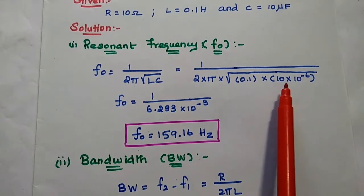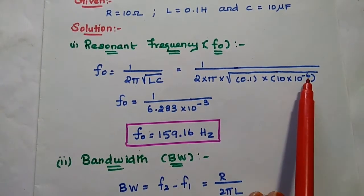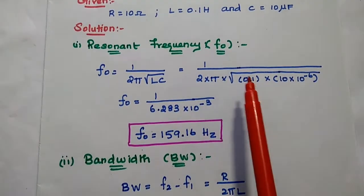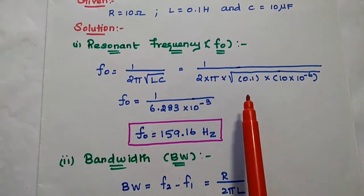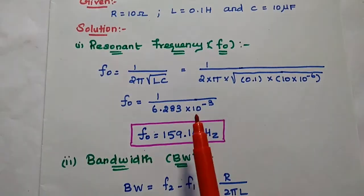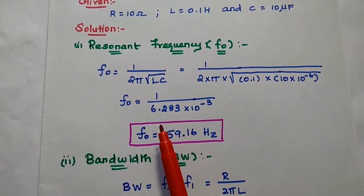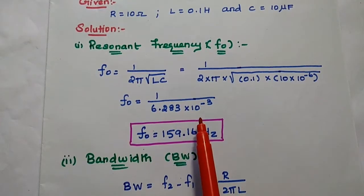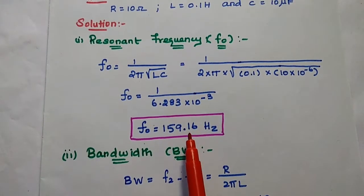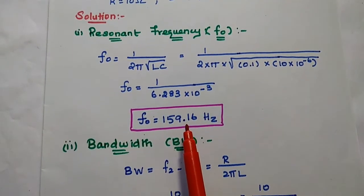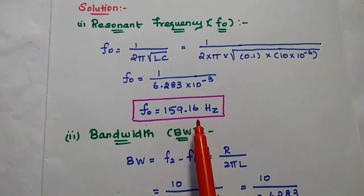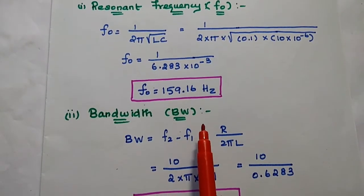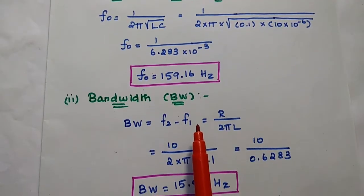Micro means 10 to the power minus 6. Simplifying this term using a calculator, we get F0 equal to 1 by 6.283 into 10 to the power minus 3, and the answer is 159.16 hertz. That is the resonant frequency value for the given circuit.